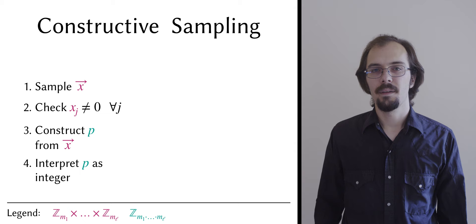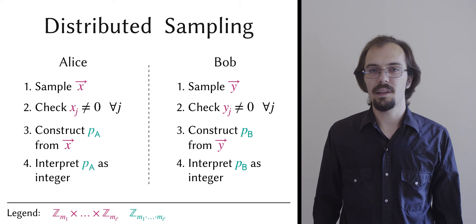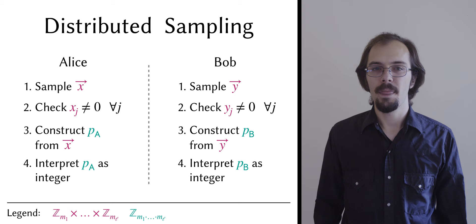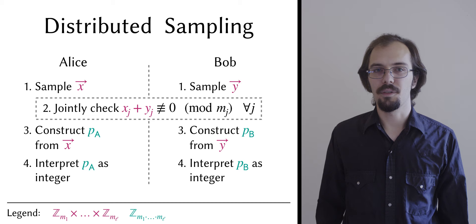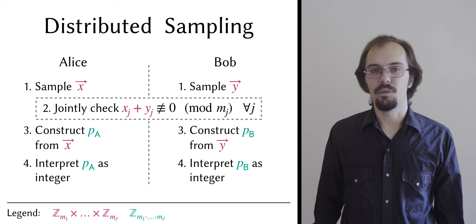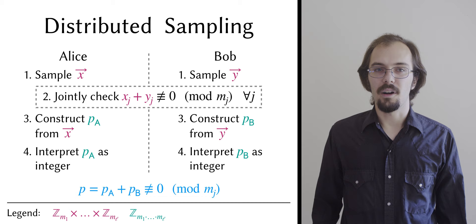It turns out that if we want to distribute this algorithm, we can do so by instructing the parties to run the algorithm individually and locally to generate integer shares of the candidate prime p. And instead of performing local zero tests, we instruct them to jointly test that the modular sums of their CRT form elements in each small prime field are non-zero. I'm going to gloss over how this works for the moment.